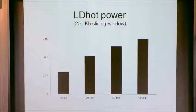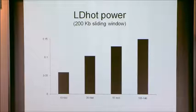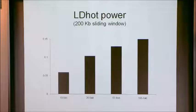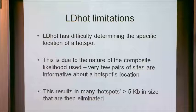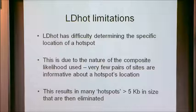Here's the power to detect a 10-fold hotspot, 20-fold, 50-fold, and 100-fold. For regions of the genome that are not optimal, power is not optimal — it ranges from 6% to maybe 15%. When you look at what's going on, one thing that becomes clear is that LDHOT has difficulty determining the specific location of a hotspot. It may think there's a hotspot somewhere, but it can't figure out exactly where it is.